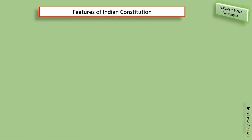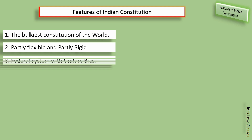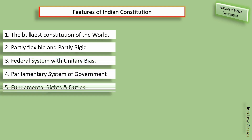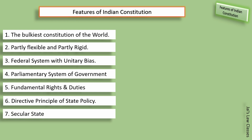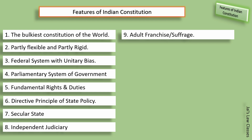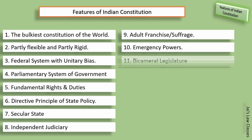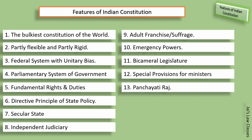Features of Indian Constitution — there are 13 features: 1. The bulkiest constitution of the world, 2. Partly flexible and partly rigid, 3. Federal system with unitary bias, 4. Parliamentary system of government, 5. Fundamental rights and duties, 6. Directive principles of state policy, 7. Secular state, 8. Independent judiciary, 9. Adult franchise, 10. Emergency powers, 11. Bicameral legislature, 12. Special provisions for minorities, 13. Panchayati Raj. Ab in points ko hum thoda aur samajhte hain.